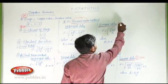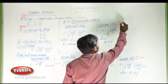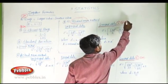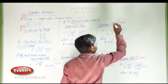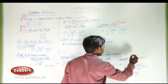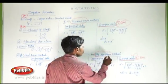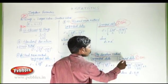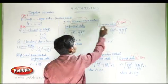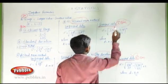These two formulas are used for five-mark questions: the step deviation method for grouped data, and the assumed mean method for grouped data.